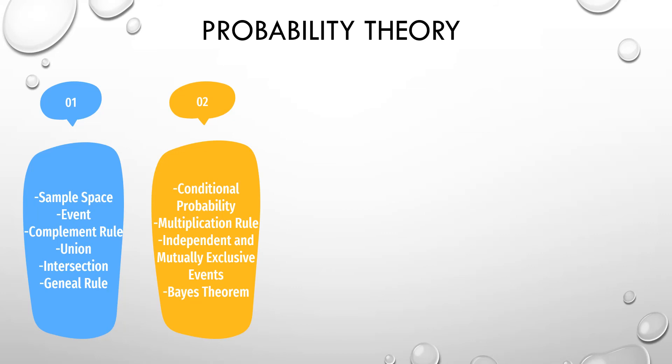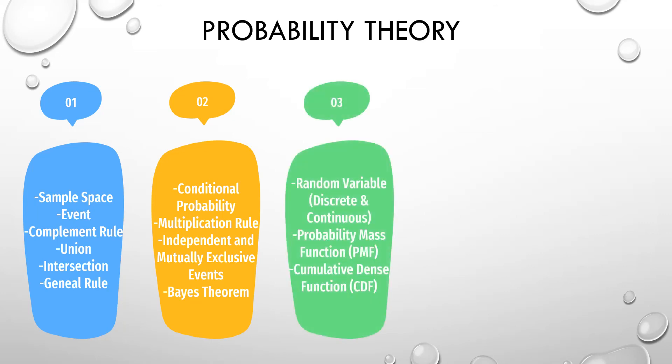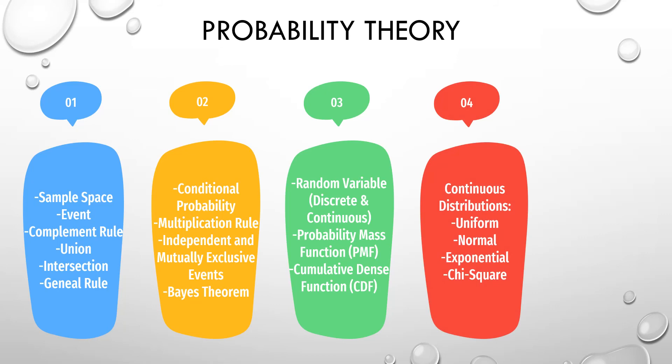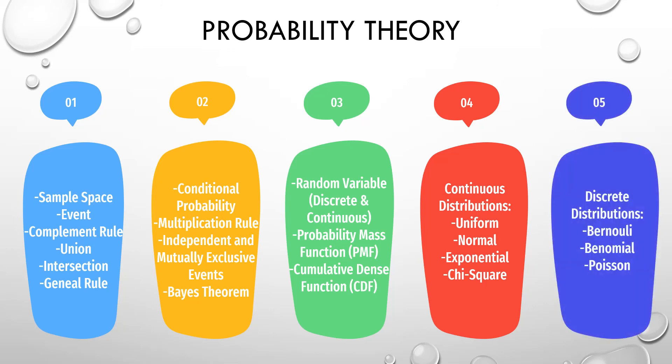After that we have to learn about random variables. We have two types: discrete and continuous. We have two types of functions that are used in probability. For example, if we have probability of events that are happening to a specific value of population, or when we are dealing with range - for example at least this value, more than this value - we have this cumulative density function. Then we have distributions. We start by continuous distributions, which we have four mainly used: uniform, normal or Gaussian, exponential, and chi-square distribution. Then we have discrete distributions, which means dealing with Bernoulli, binomial, and Poisson.